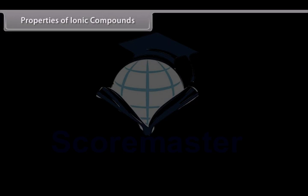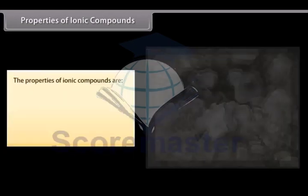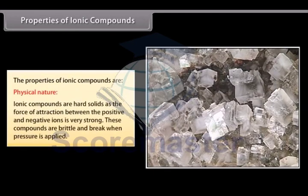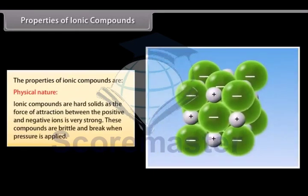Properties of Ionic Compounds. Let us look at some Ionic Compound properties. Physical Nature. Ionic compounds are hard solids as the force of attraction between the positive and negative ions is very strong. These compounds are brittle and break when pressure is applied.